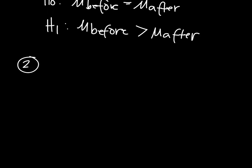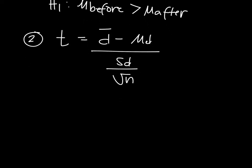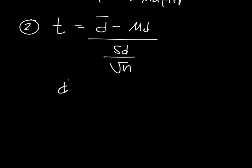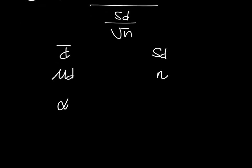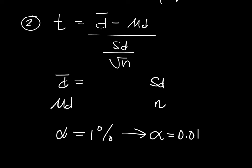Step two is where we list the information needed to compute the test statistic. We need d-bar, mu-d, sd, and n. We also note the significance level, which is one percent, so alpha equals 0.01. D-bar is the average of the differences in weights. Mu-d will be zero because we assume mu-before equals mu-after, meaning their difference is zero. The sample size n is 10.